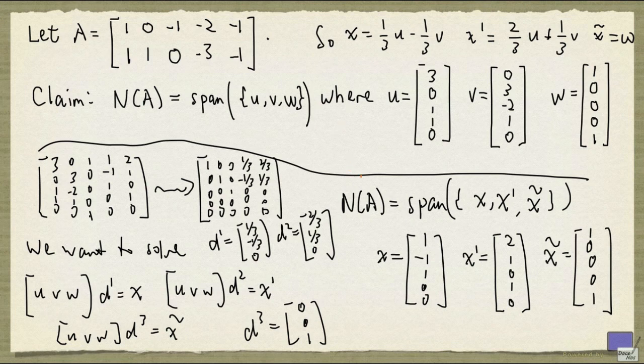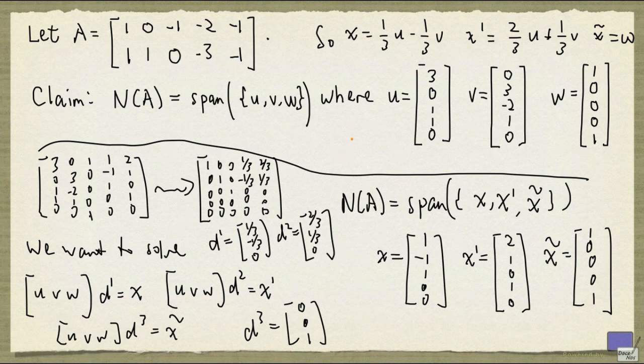One final note. Notice that, if you look at the set u, v, w, none of the elements could be expressed as a linear combination of the other two. You can check this.